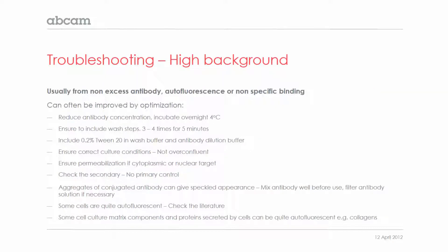Moving on to high background: if you have high background, it's usually from excess antibody, autofluorescence, or nonspecific binding. For this, you need to do the opposite — reduce the antibody concentration. Make sure you're incubating overnight at four degrees. Ensure that you're including wash steps: wash three to four times for five minutes at each step, and make sure you include a mild detergent like 0.2% Tween in the wash buffer and antibody dilution buffer.